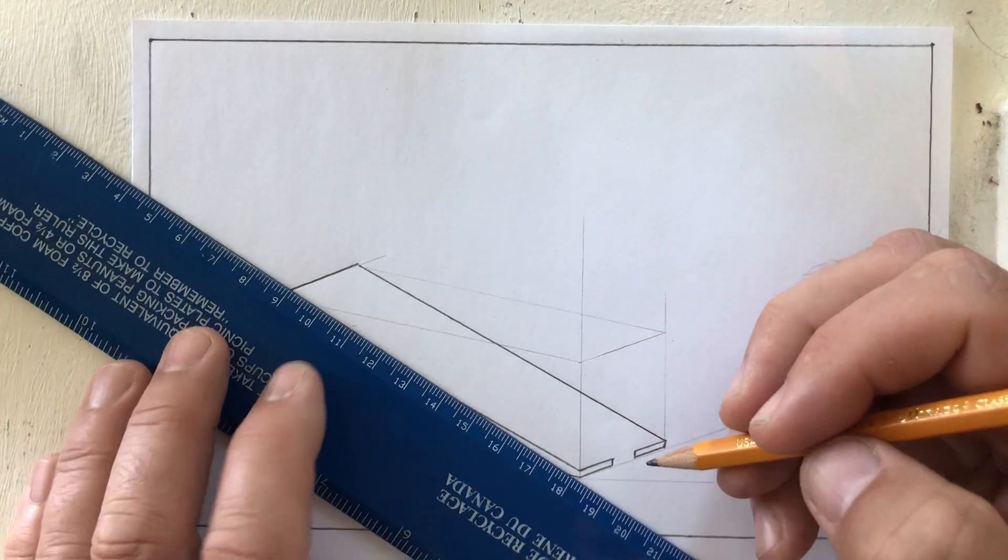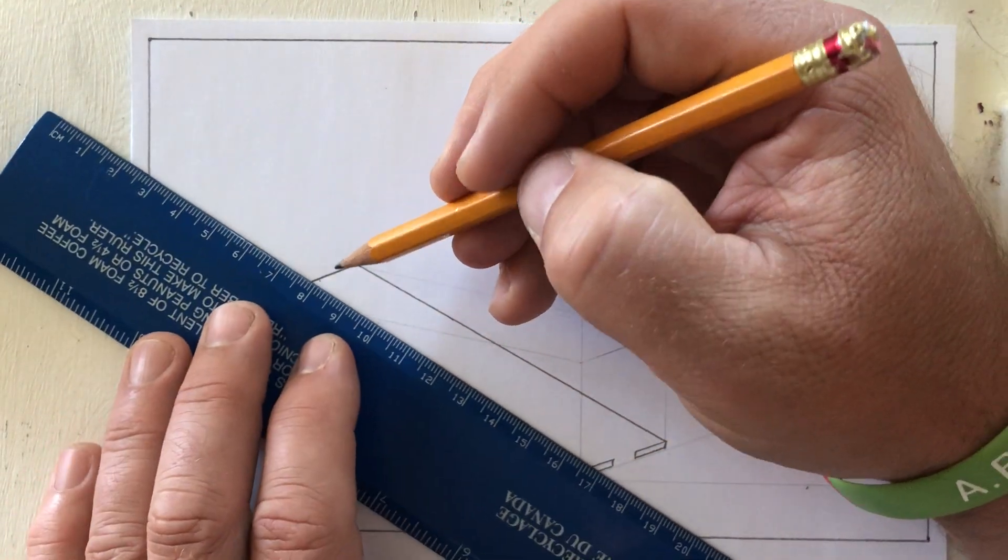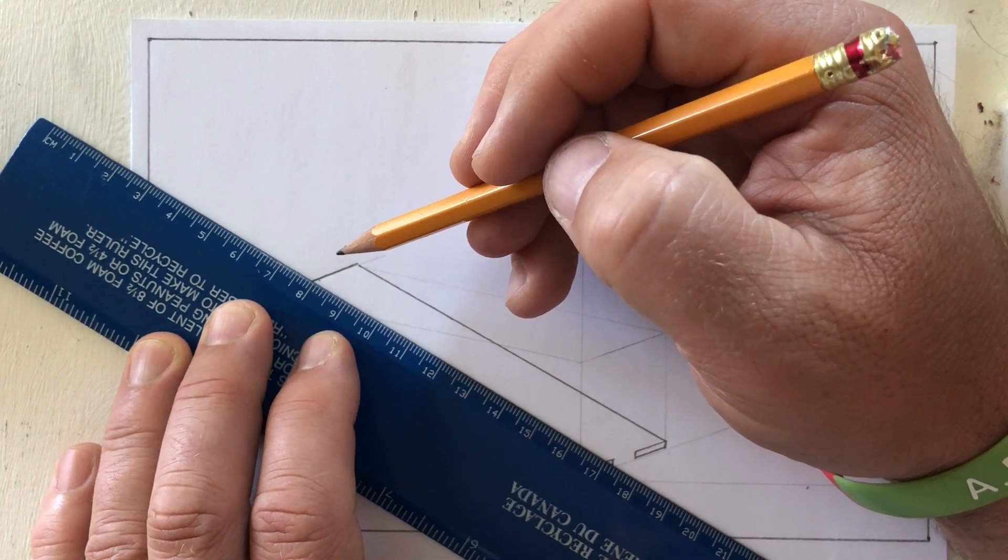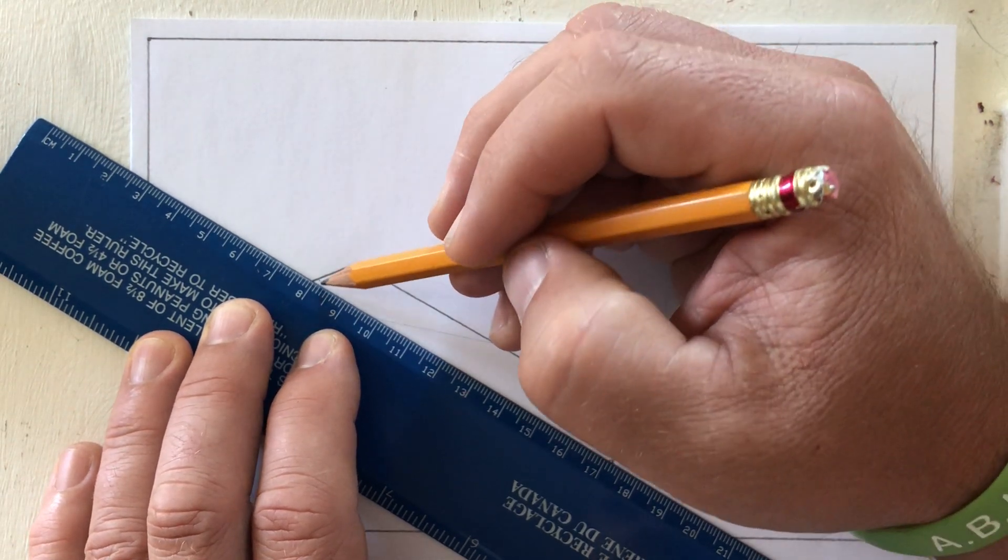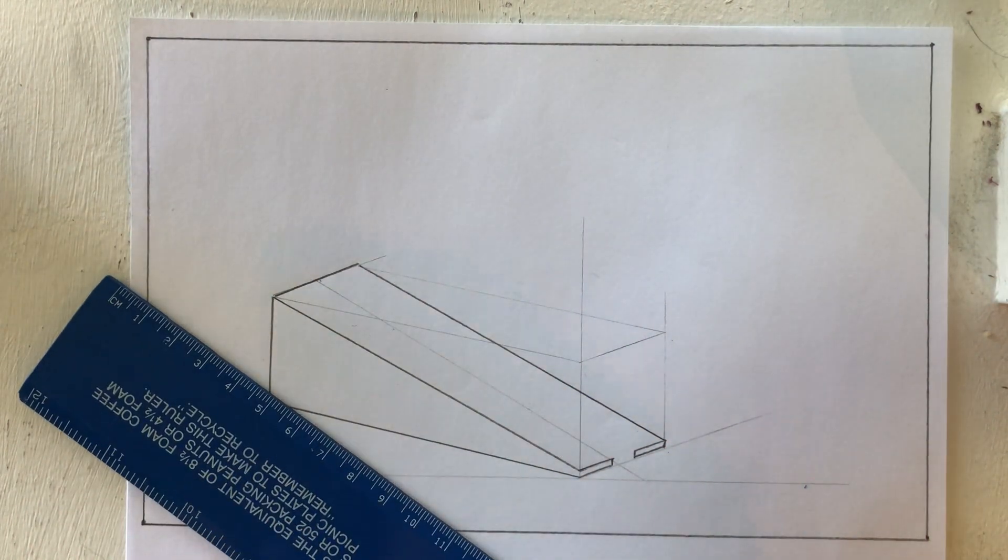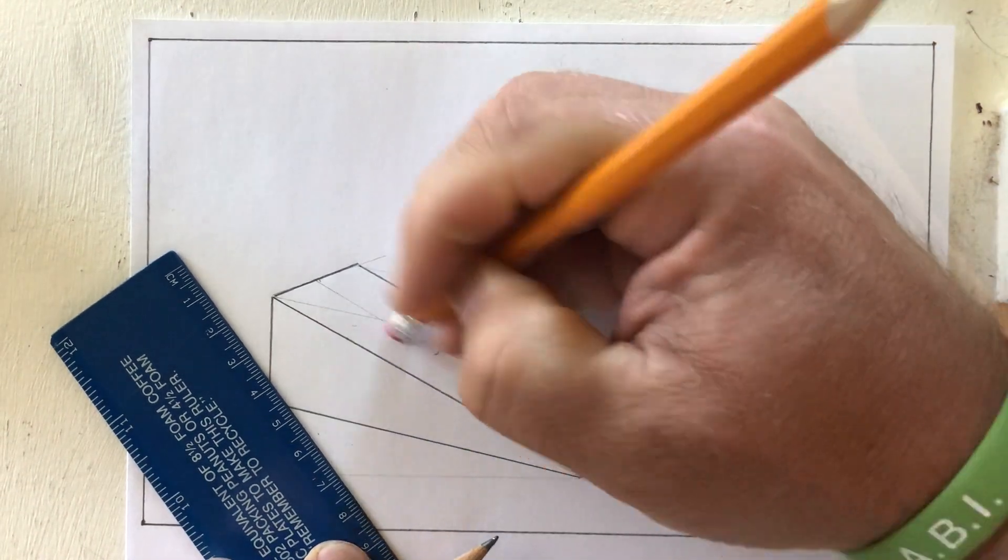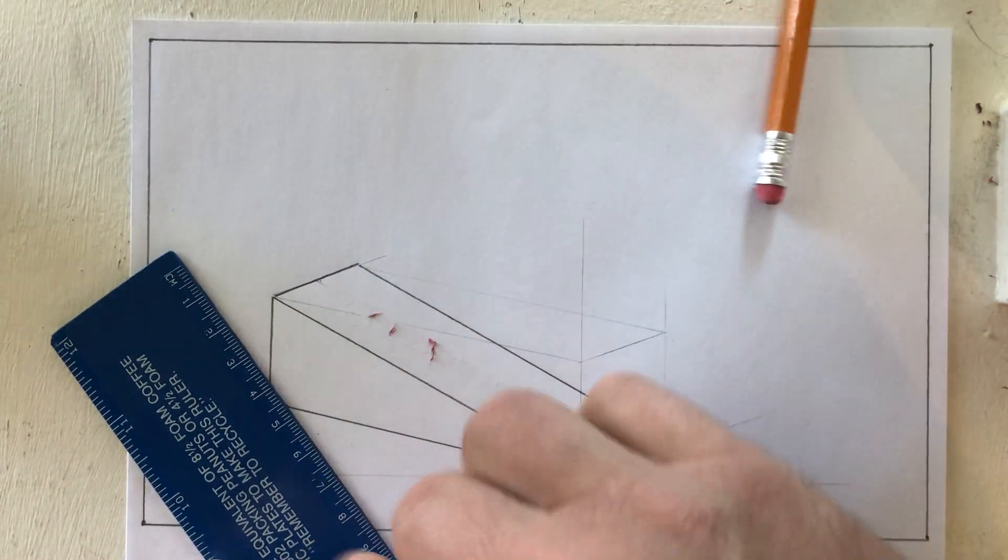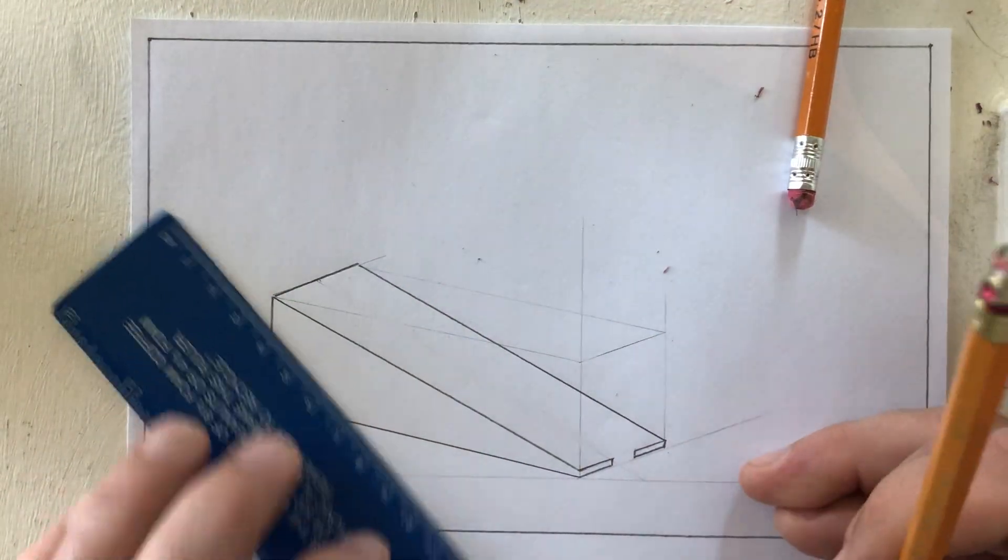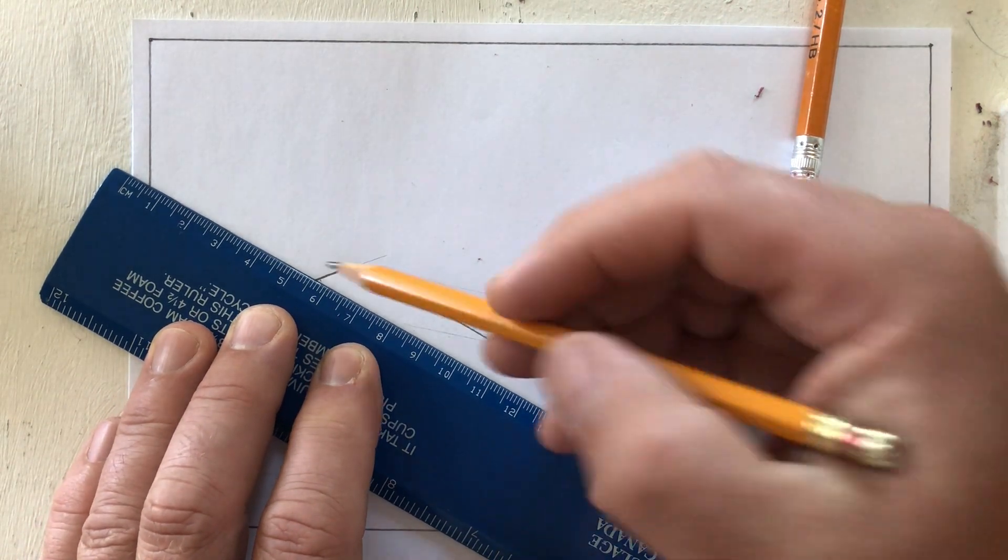I'm going to draw a line right down the middle of this object, keeping that alignment the same. This is a light guideline. Oh that's not really right down the middle is it? Bring my eraser into play here. The reasons why we like nice light guidelines. There we go, that looks better.